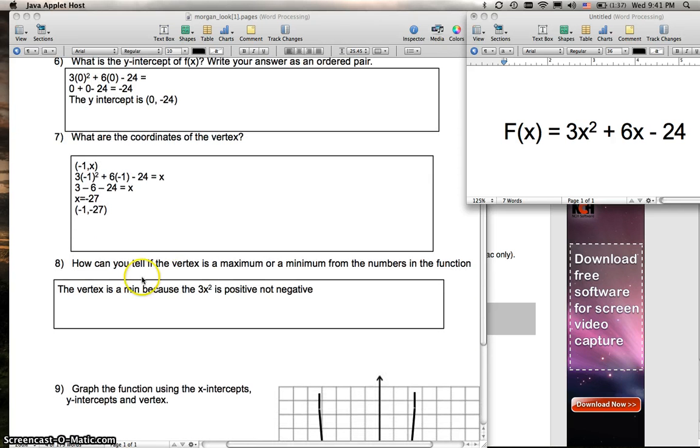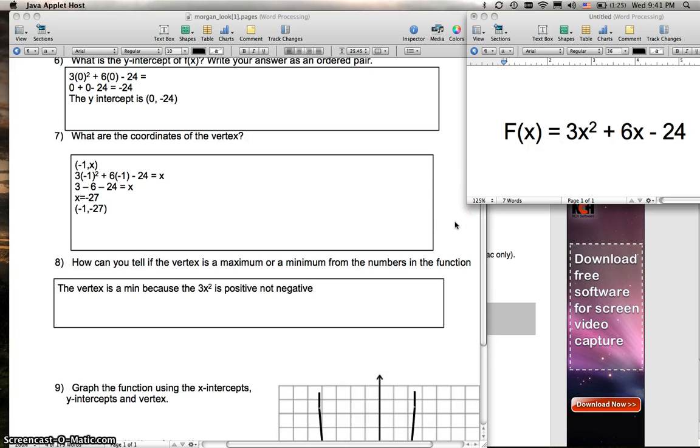Then the next one: how can you tell if the vertex is a maximum or a minimum from the numbers in the function? Because there is no negative sign before the 3x squared, right here, you know that it's a minimum, aka a smiley face graph.